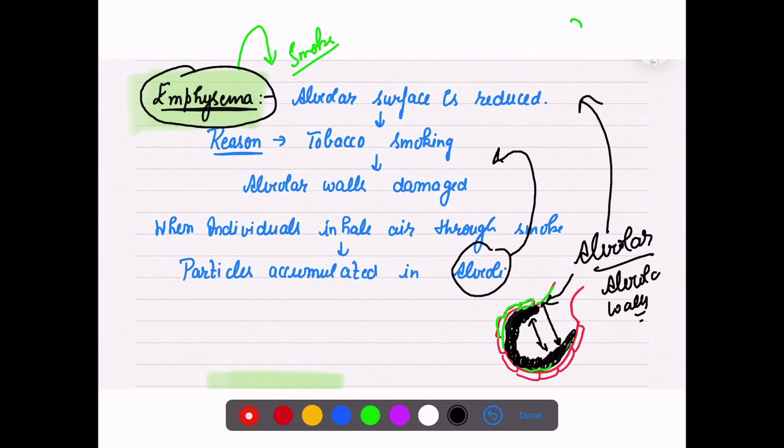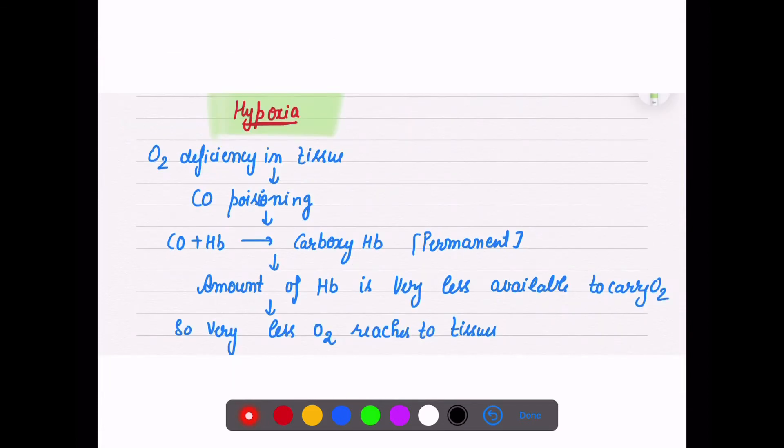Next is hypoxia. As you just look at the word - ox means oxygen deficiency. There is hypo - we use hypo for less when something is less available. Hyper is for more. Here we are talking about oxia, that means oxygen. So oxygen deficiency in the tissues.